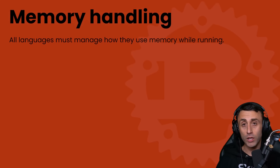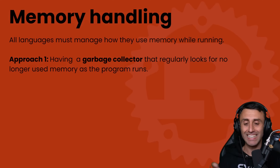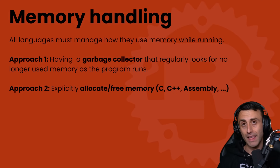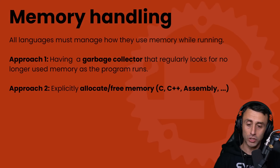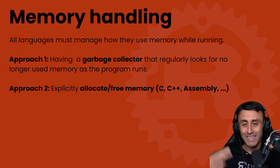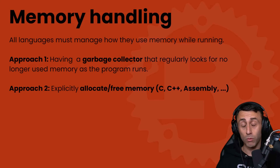All programming languages must manage how they use memory while their programs are running. One approach is to have a garbage collector that regularly cleans up memory by removing variables that are no longer used. This makes things simple but not efficient. A second approach is to explicitly allocate and free memory, which is used by some languages, especially low-level languages.